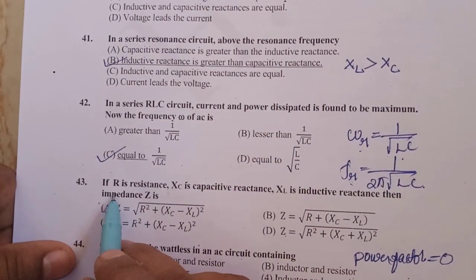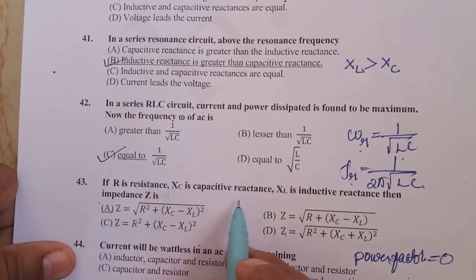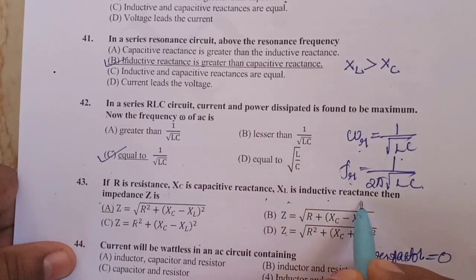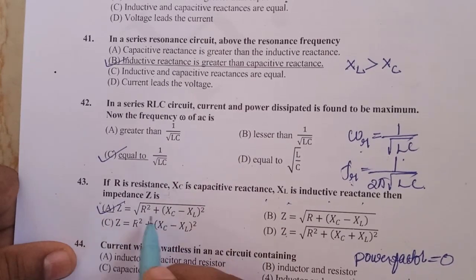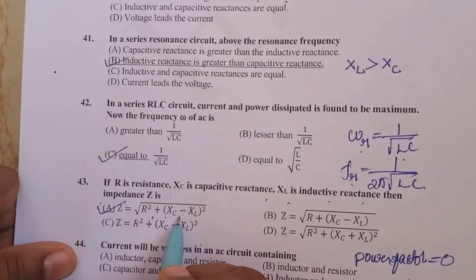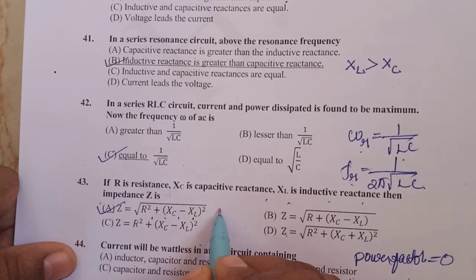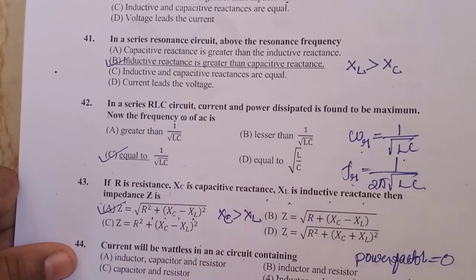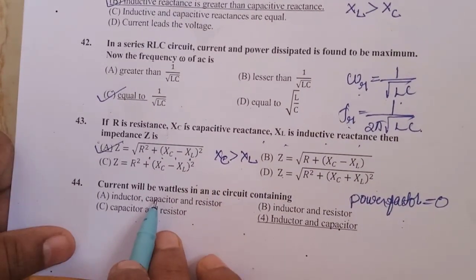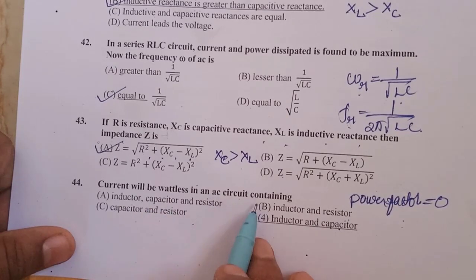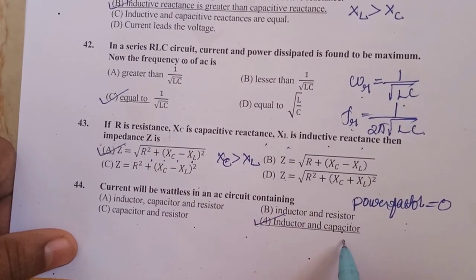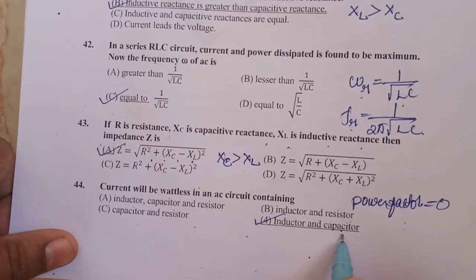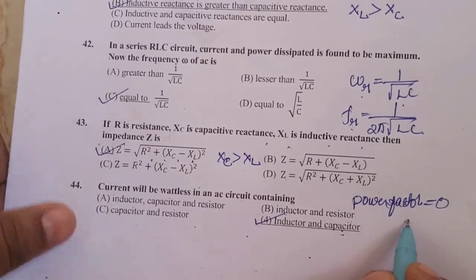If R is the resistance, Xc is the capacitive reactance, and XL is the inductive reactance, then impedance Z is given by Z equals root of R squared plus (Xc minus XL) whole squared, where Xc is greater than XL. Current will be wattless in an AC circuit containing only inductor and capacitor because power factor equals 0.